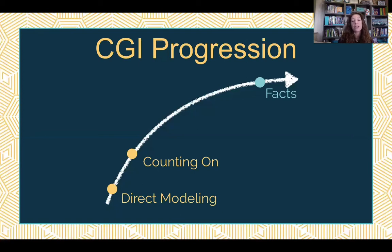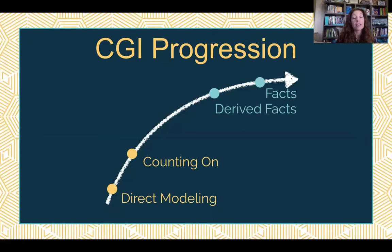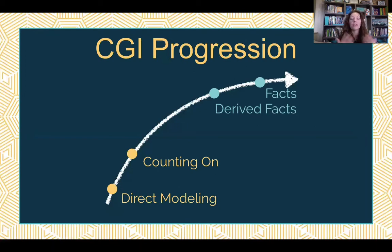The in-between stage is what they call derived facts. This is when a kid can use something they know to help them with something they don't know — they're deriving the fact. So when the problem is four plus three, a kid might say, 'Well, four plus four is eight, just take one away — that gives me seven.' Or another kid might say, 'If it was three plus three it would be six, but it's one more than that.' Derived facts are those thinking strategies that we want to help kids develop.